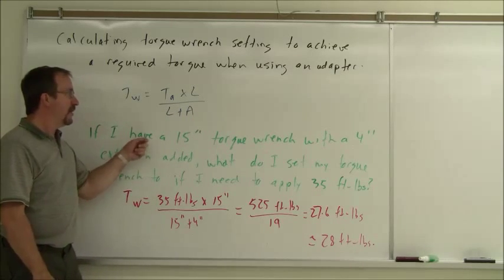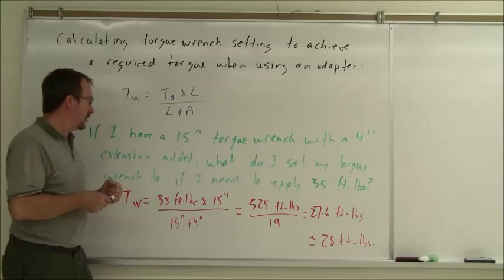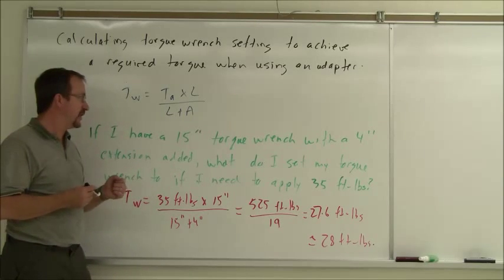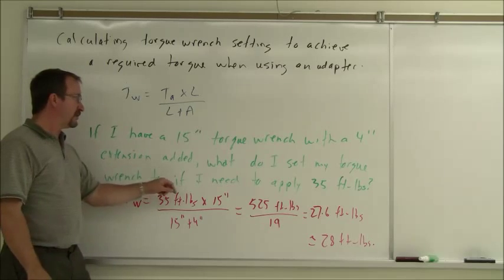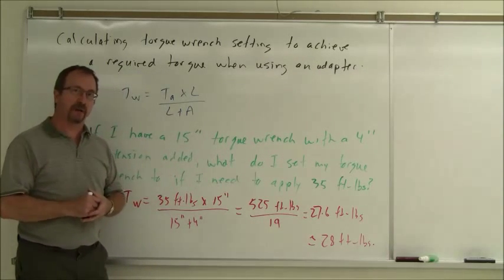So as an example, if I had a 15 inch torque wrench with a 4 inch extension added on, so it's now 19 inches long instead of 15, what do I set my torque wrench to if the force I want to apply is 35 foot pounds?